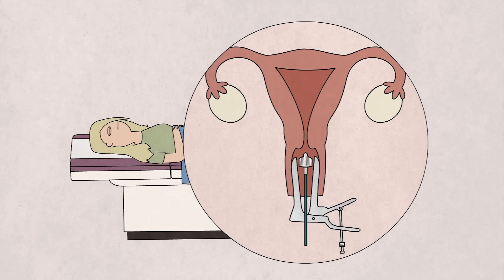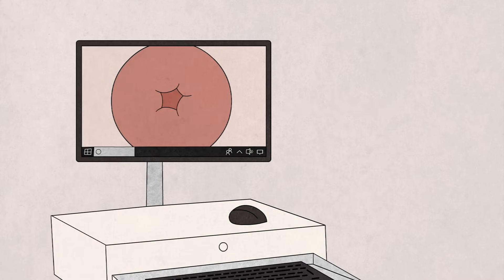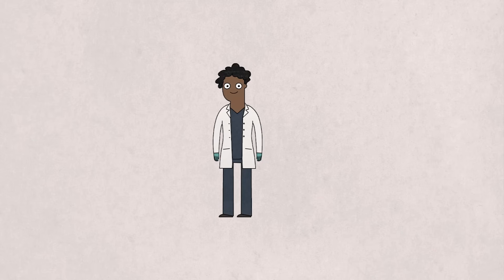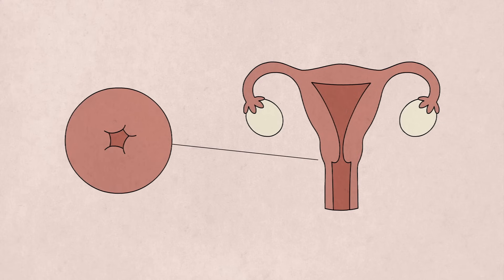Patients are then either monitored with more frequent pap smears or, for more severe irregularities, undergo a procedure called a colposcopy. This involves a doctor examining the cervix through a microscope, and possibly taking a small biopsy of tissue for closer examination. In some cases, the affected tissue may be removed.